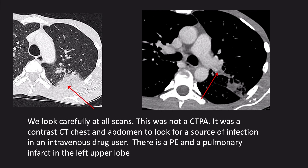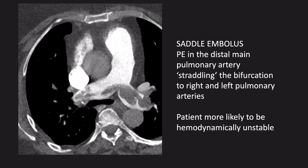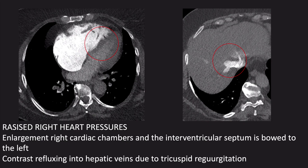It's important to remember that pulmonary emboli can turn up unexpectedly on contrast CT scans not performed as a CTPA — PE is common in oncology patients. This example is of a CT to look for a source of infection in an intravenous drug user; there is a PE and pulmonary infarct in the left upper lobe, sometimes seen when the patient has an infected DVT from injecting into the femoral vein. Where a PE is seen in the main pulmonary artery crossing the bifurcation into the right and left pulmonary arteries, it's called a saddle embolus. Patients with a large central clot are more likely to be haemodynamically unstable. We can assess for instability by looking for features of raised right heart pressures: enlarged right heart chambers, the interventricular septum bowed into the left ventricle, and contrast refluxing down the IVC and into the hepatic veins due to tricuspid regurgitation.